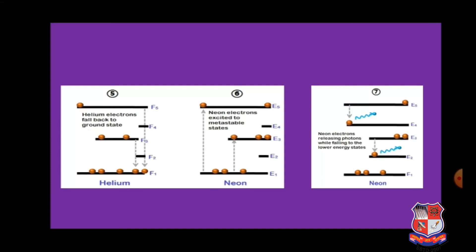This video covers the construction, principle, and working of the HeNe laser, which is helpful for gaining a minimum of seven marks in your GTU examination. This question is definitely asked in previous year GTU exam papers, so I strongly suggest you prepare this topic thoroughly for good marks. I hope you now have a clear idea about the HeNe — helium-neon — laser, its components, working principle, and the basic functionality of helium and neon gases and their energy levels. Thanks for watching this lecture.